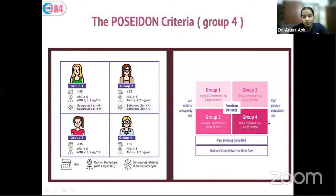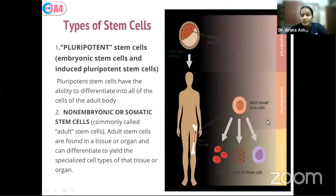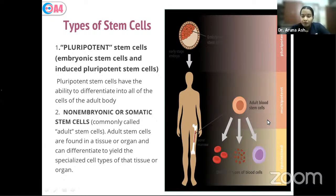For group four patients, the first counseling option is a donor oocyte program, which is effective. However, many patients don't accept donor oocytes as they feel it takes away their reproductive potential. For them, stem cell therapy before a second IVF cycle is giving results. We were initially compelled to do this by patients but now understand it is beneficial. Before starting, it was important to have good discussions with the scientists helping prepare the stem cells.